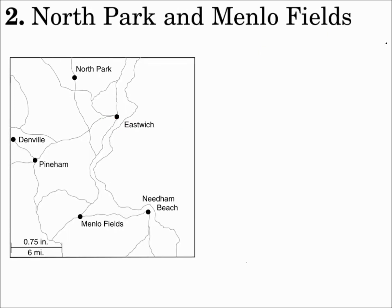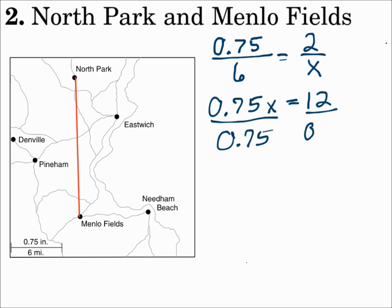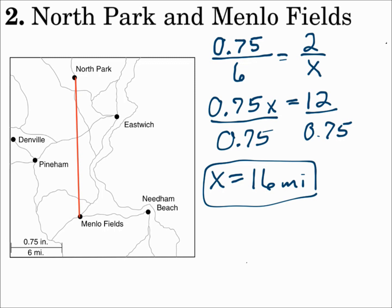Number 2: from North Park to Menlo Fields. If I measure that distance on the map, it's 2 inches. Now let's set up the proportion and find the actual length. We'll do map distance over actual distance. The scale of the map: map distance 0.75 over actual distance 6, equals map distance 2 over actual distance x. Map distance in inches over actual distance in miles — cross multiply and solve, and you get 16 miles. Make sure the proportion is organized.